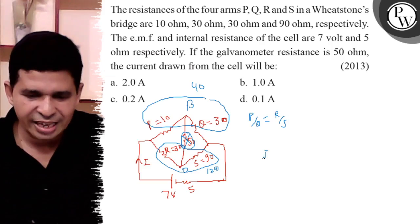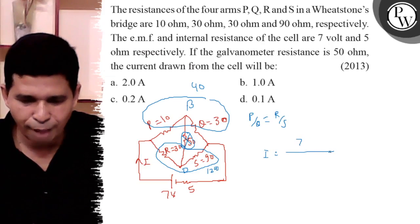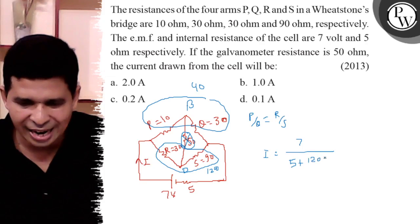So what is the current I? It is simply the net voltage 7 divided by 5 plus the parallel combination of 120 and 40.